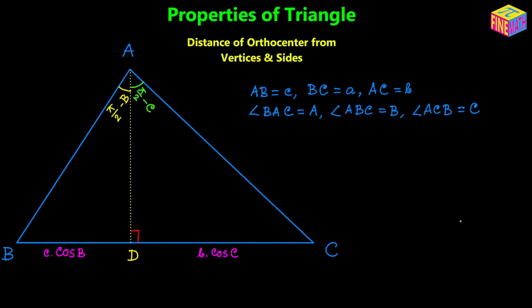Since AD is perpendicular to BC, triangle ABD is a right triangle where angle ADB is 90° and angle ABD is uppercase B. So angle BAD will be 90° − B. Similarly, triangle ADC is also a right triangle where angle ADC is 90°, angle ACD is uppercase C, and angle DAC is 90° − C, or π/2 − C.